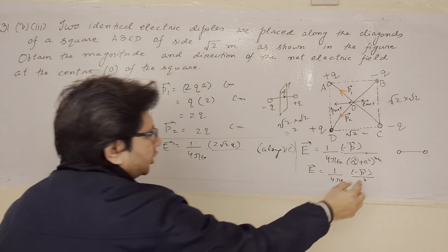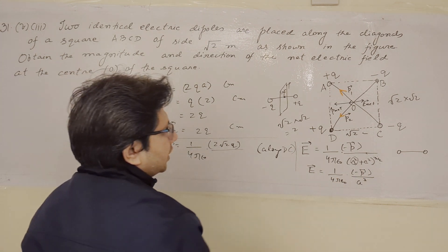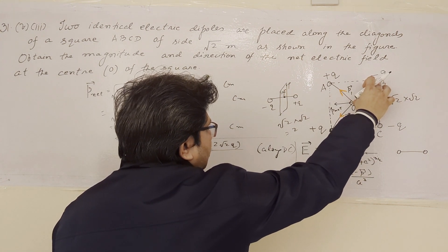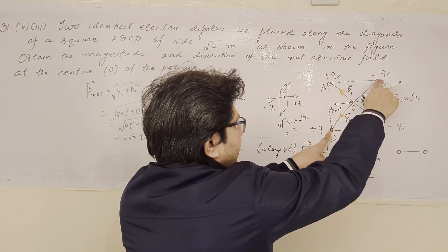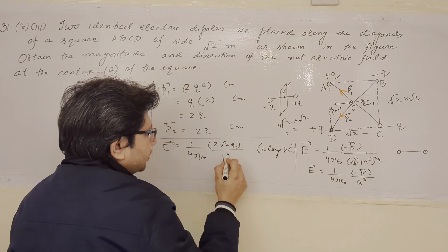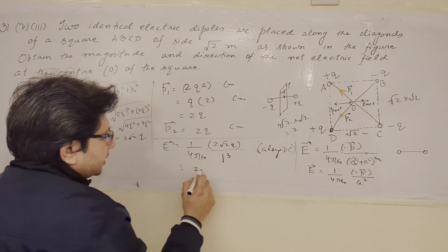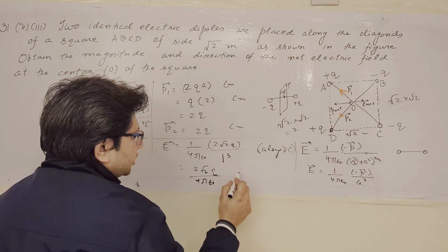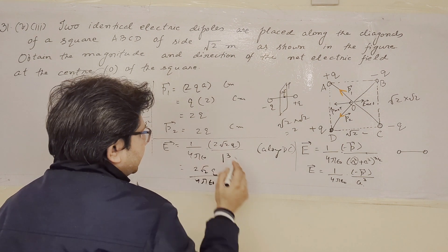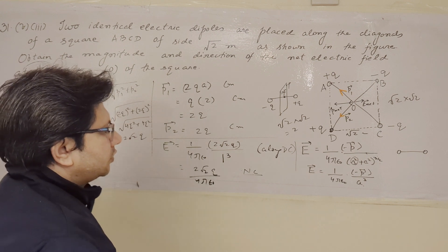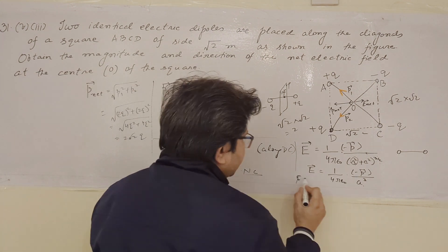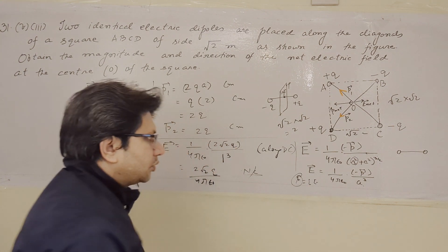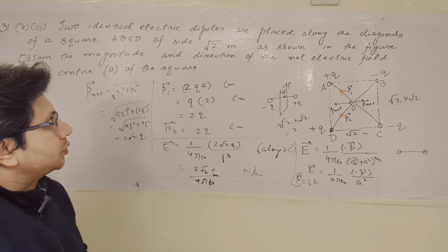In the denominator, we have a cubed, where a is the half-length of the dipole. The full diagonal distance is 2 meters, so the half distance a equals 1 meter. Putting a equals 1, we get 1 to the power 3 equals 1. So the final result is E equals 2 root 2q upon 4 pi epsilon naught. The direction of E net is along DC, as E net is parallel to DC. The unit of electric field is newton per coulomb.